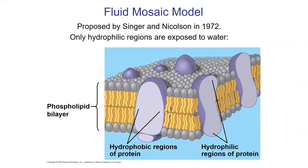Taking all these components together gives us the fluid mosaic model of the membrane, proposed in the 1970s. It has two parts: fluid and mosaic. The fluid part refers to the phospholipids — I'll talk about that in a moment. The mosaic, like a patchwork, refers to proteins embedded in a sea of phospholipids.